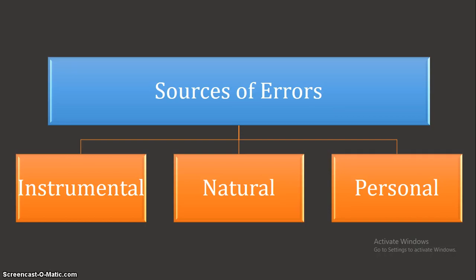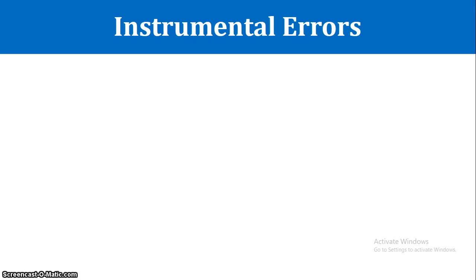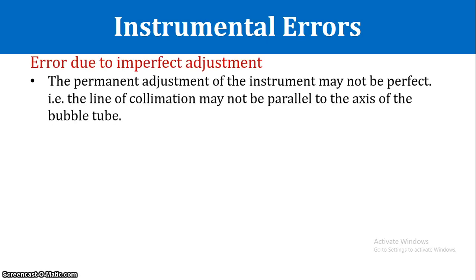Now, errors in leveling. The first category is instrumental errors. The first error is due to imperfect adjustment. Different axes of the instrument have specific relationships — for example, the level tube axis must be parallel to the line of sight. If this is not satisfied, the telescope will not be truly leveled and there will be error.